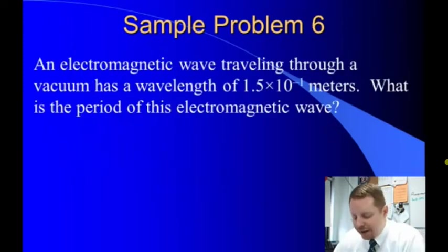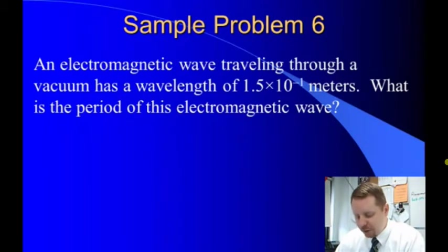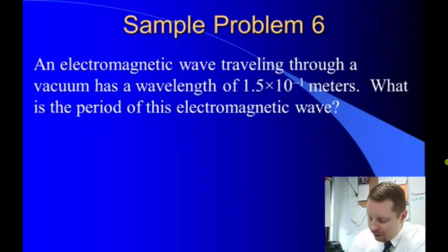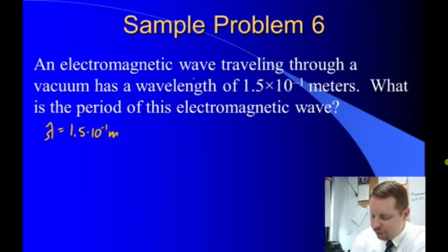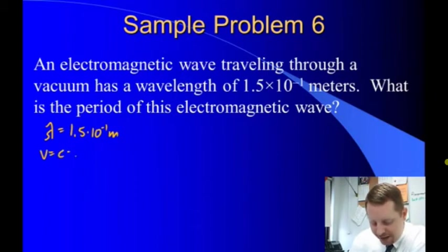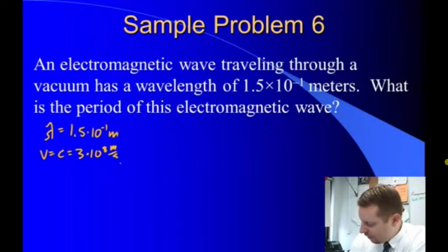An electromagnetic wave traveling through a vacuum has a wavelength of 1.5 times 10 to the minus one meters. What is the period of this electromagnetic wave? We know it has a wavelength, lambda, of 1.5 times 10 to the minus one meters, and since it's an electromagnetic wave traveling through a vacuum, we know its velocity is the constant c, or three times 10 to the eighth meters per second. We need to find period.